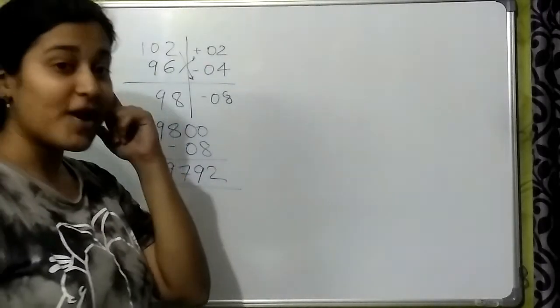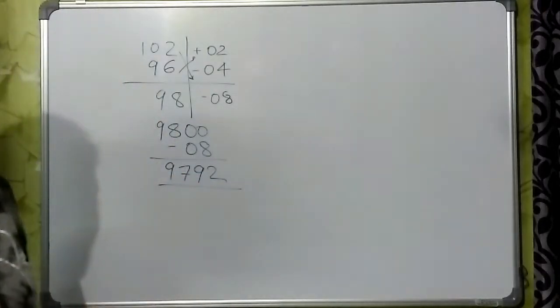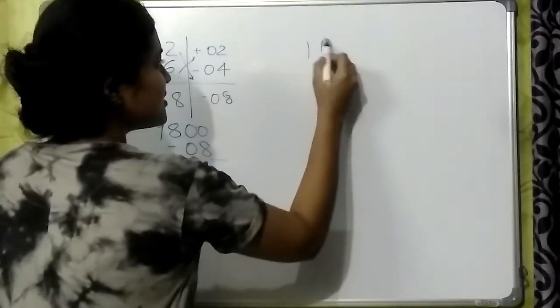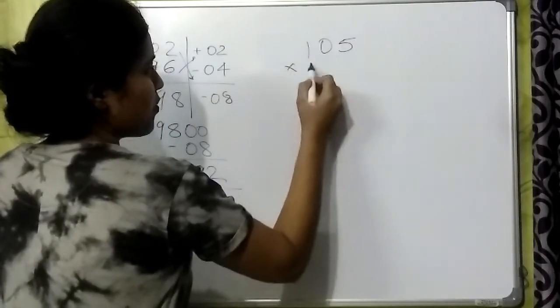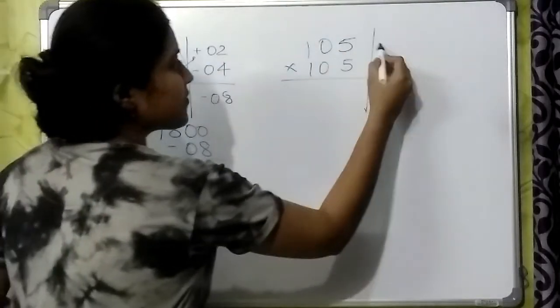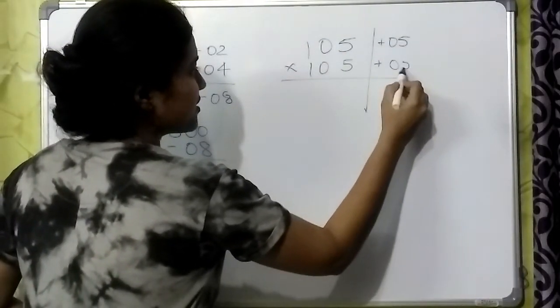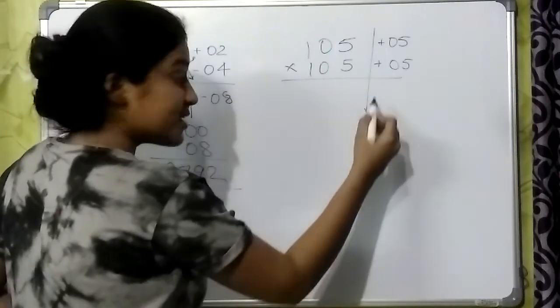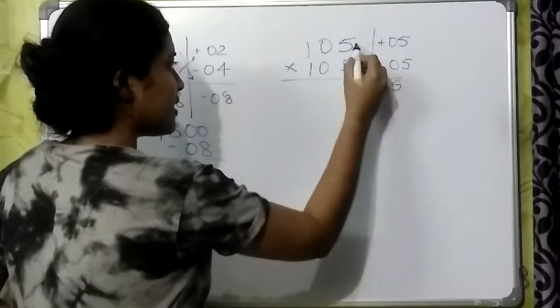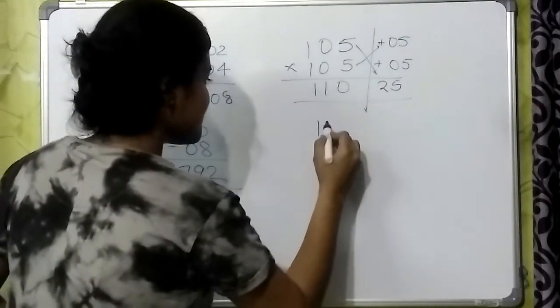This method is very well to calculate square of numbers which are very close to 100. Let us see the square of 105. 105 into 105. This differs from plus 05. Same over here. We will multiply these two and cross addition which will give us 11025 which is the answer.